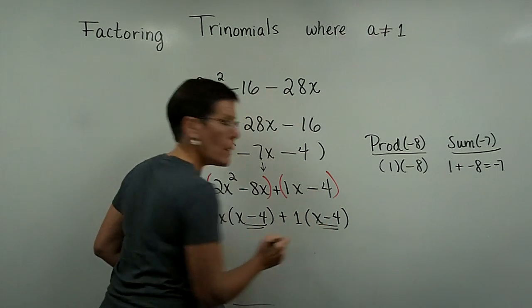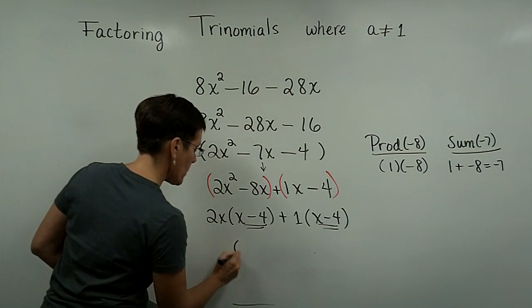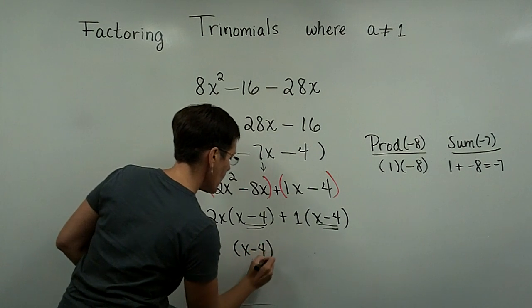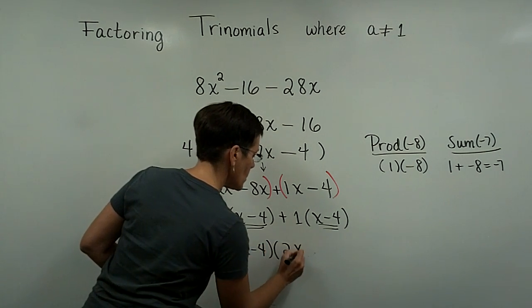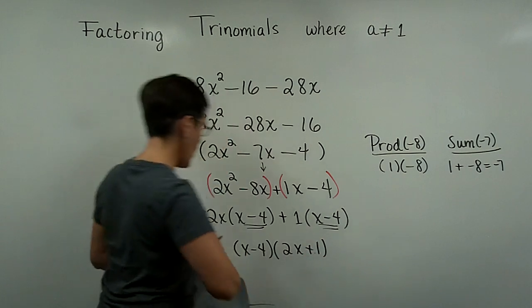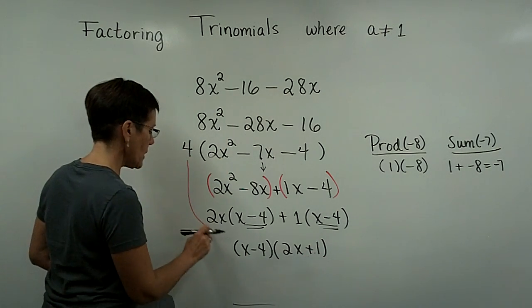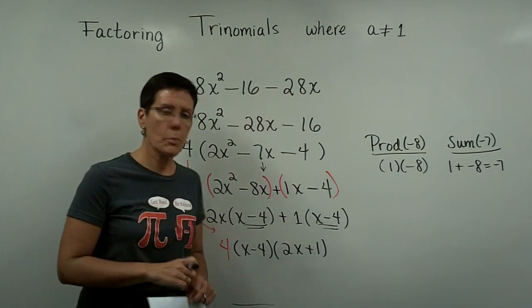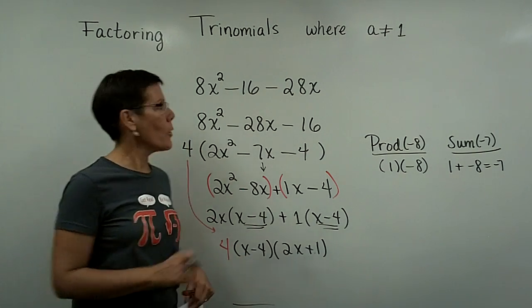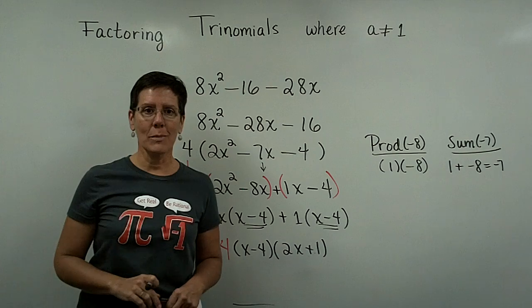But lo and behold, those binomials match. And so I'm going to write down that common binomial factor that I'm pulling out. And then this 2x plus 1 goes in its own set of parentheses. And whatever you do, don't forget that way back when, you pulled out a 4 out of this original problem, and this is the complete factored form for this original trinomial.